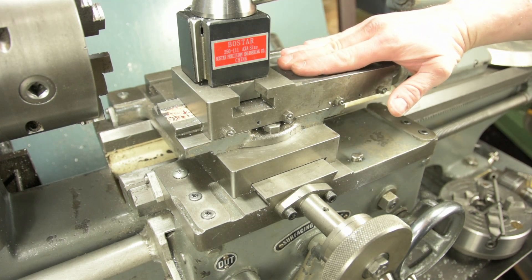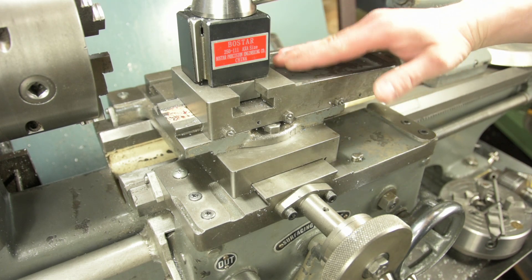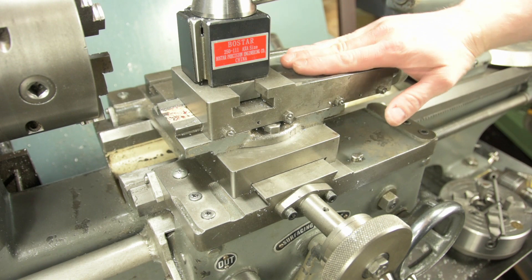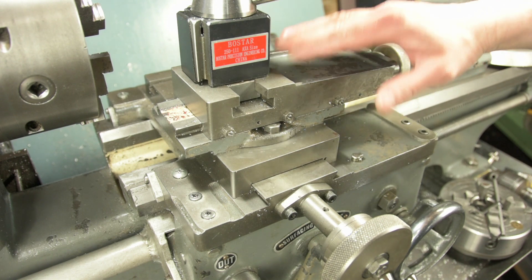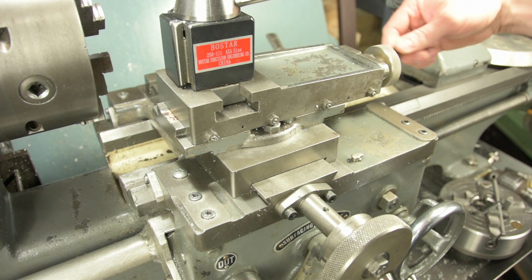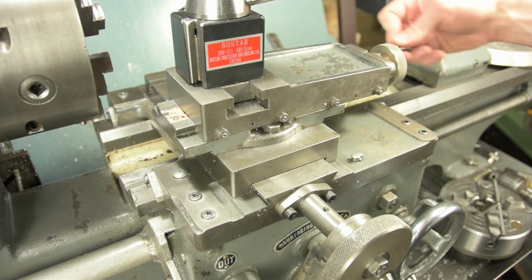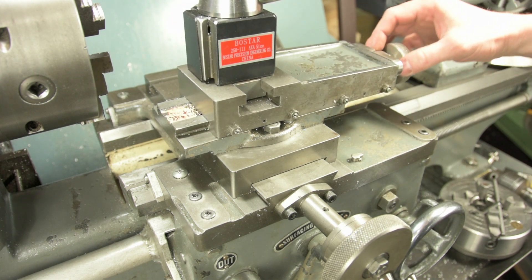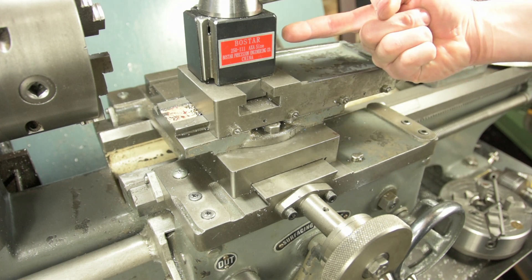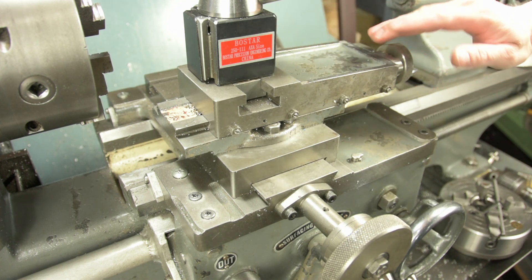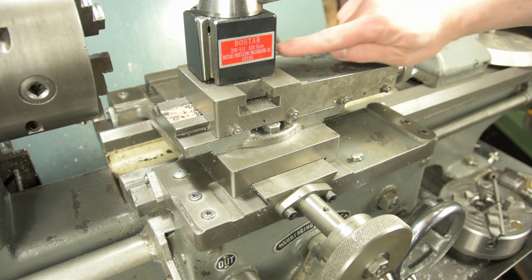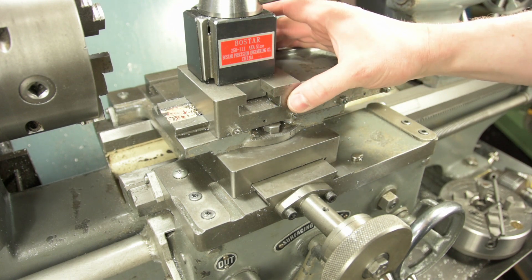If we angle this to a slight angle and put a cut on using the compound, for a given distance in this direction, feeding slightly towards the center line of the lathe, we can make it move a tiny amount in this direction.